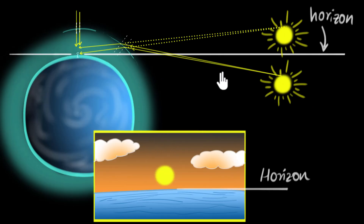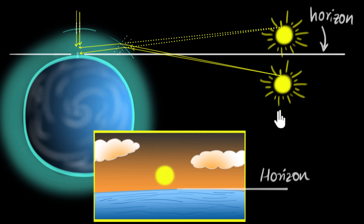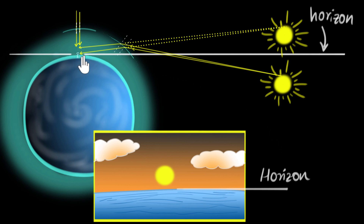Our atmosphere makes objects appear higher in the sky, and the effect is the strongest near the horizon. To be more specific, the lower the object in the sky, the stronger the shift. Of course, if the object gets too low, eventually the light will not bend enough to reach our eyes. But in general, the lower the object, the more this shifting effect.